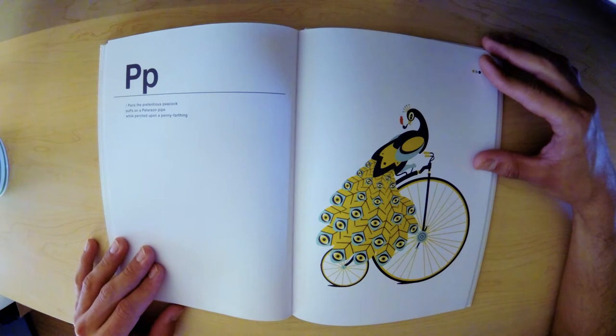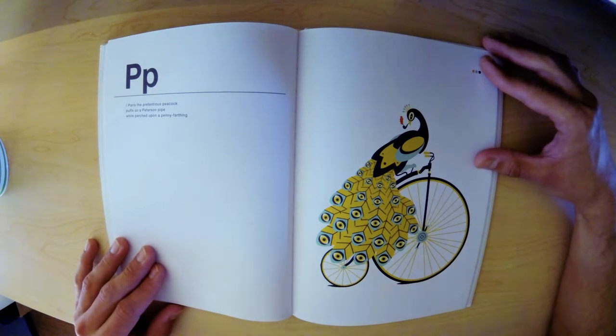P. Paris the pretentious peacock puffs on a Peterson pipe while perched upon a penny farthing.